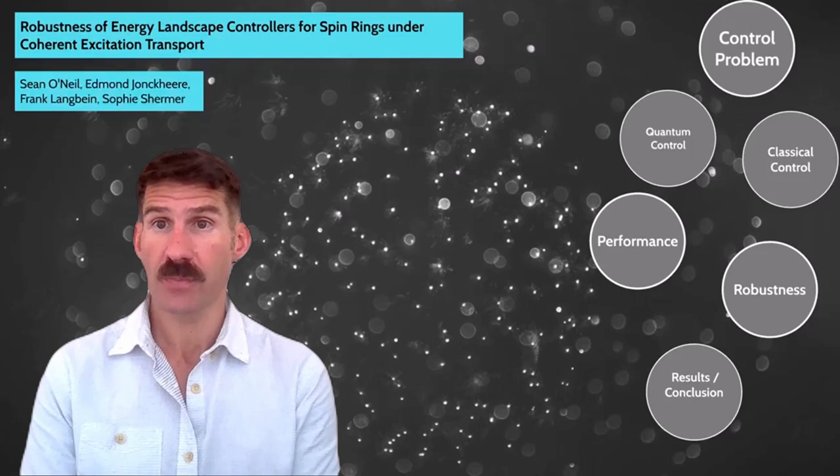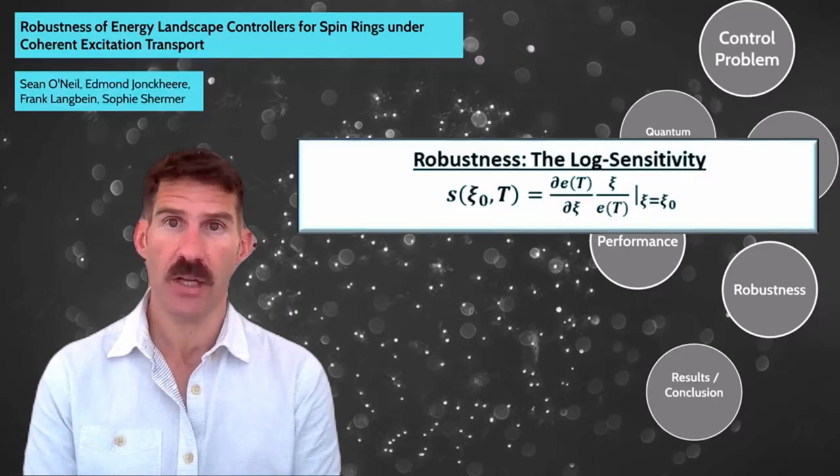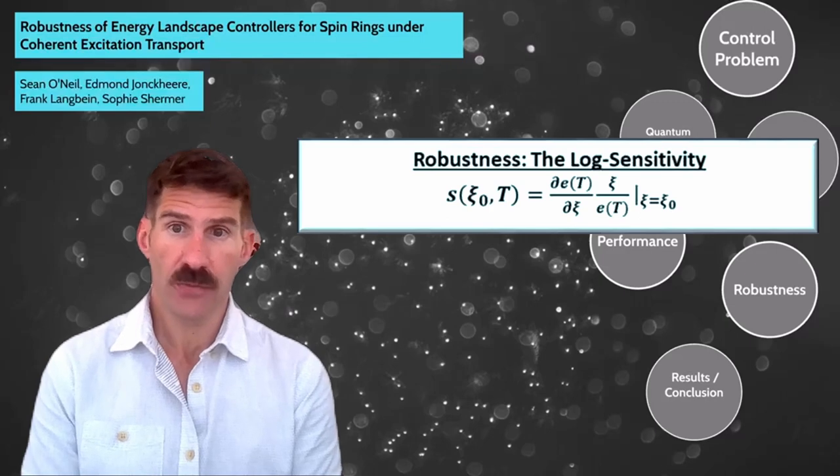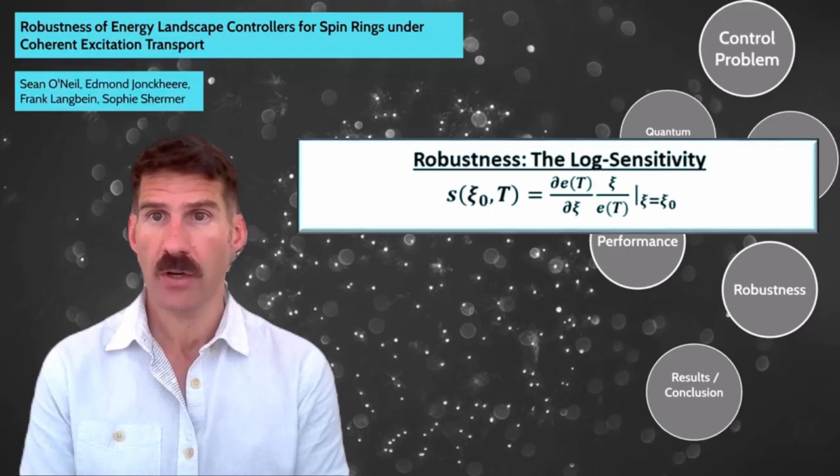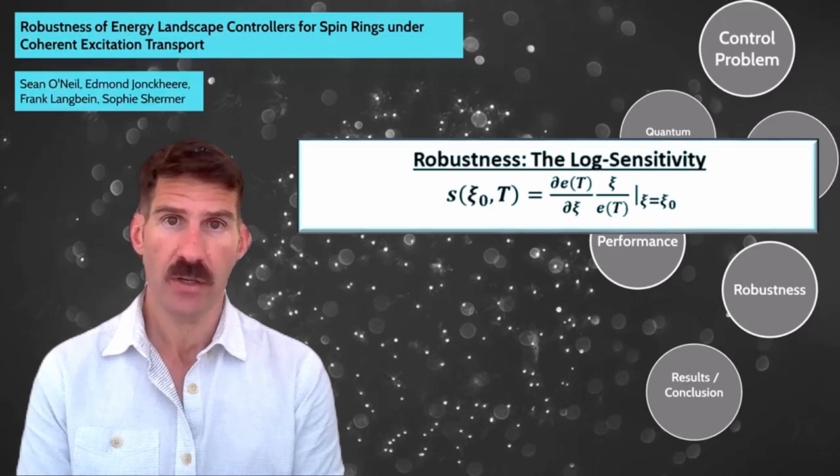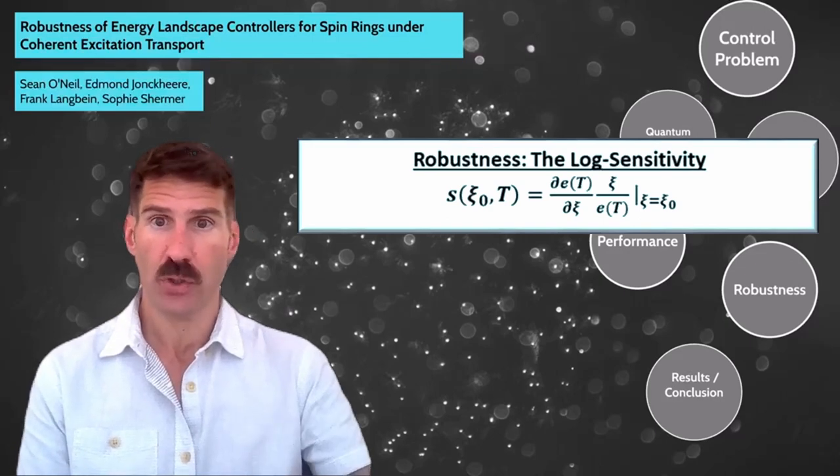As for our robustness metric, and in keeping with the classical tracking control problem, we use the logarithmic sensitivity, basically the differential sensitivity of the fidelity error to the given uncertainty, normalized by the nominal fidelity error and the nominal value of the uncertain parameter.